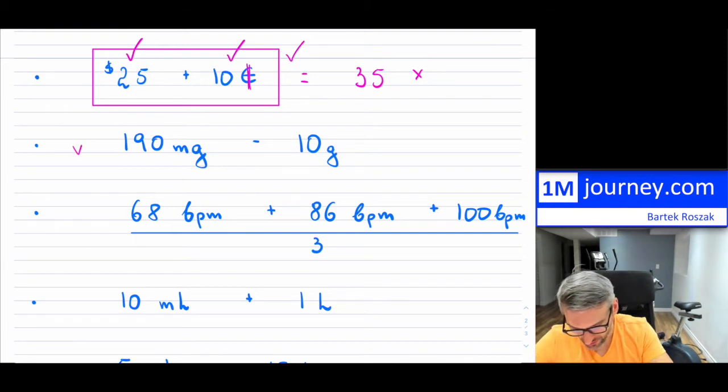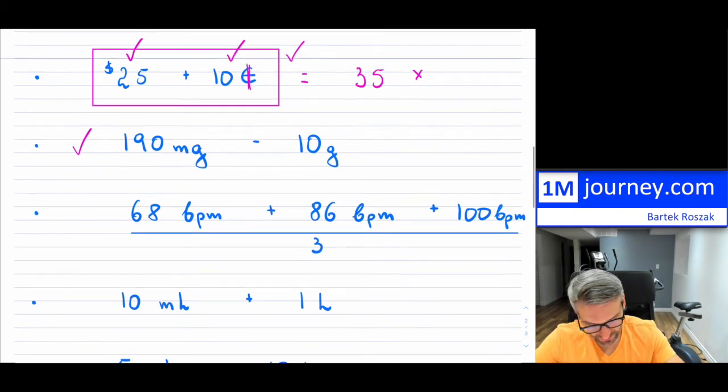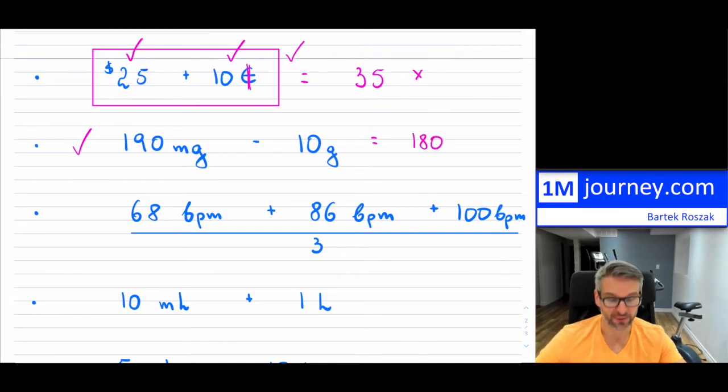Okay, so the second example that we have, which is this one. So notice that this is a subtraction. And again, if you ignored your units, you might think that this is 180 as a result. But of course, you need some units in here. Now, what units do you give?